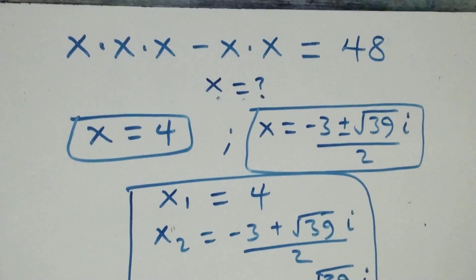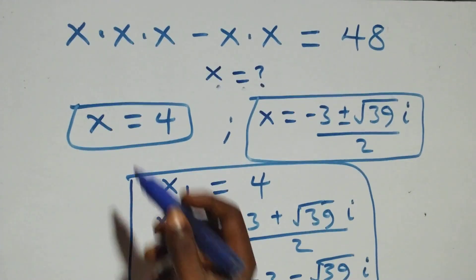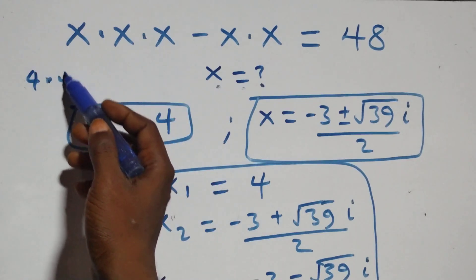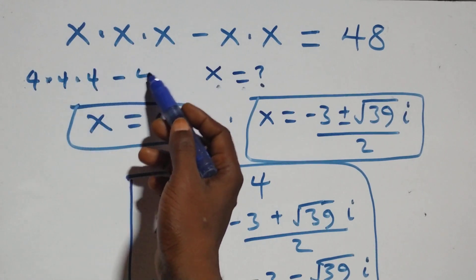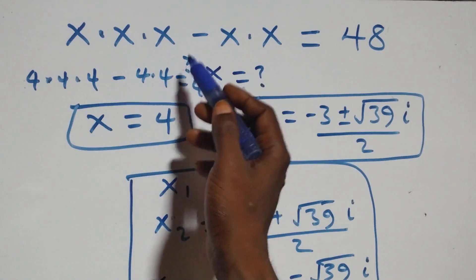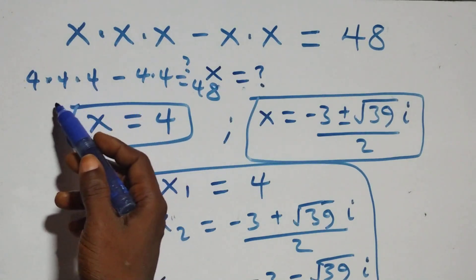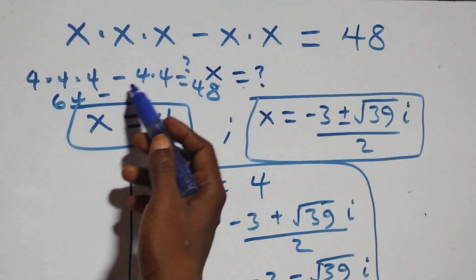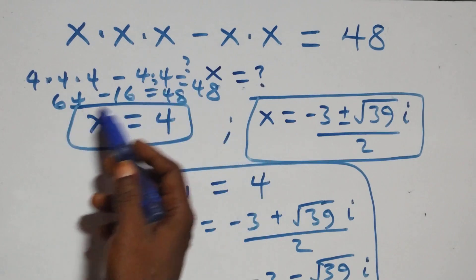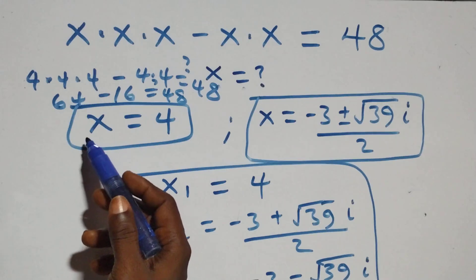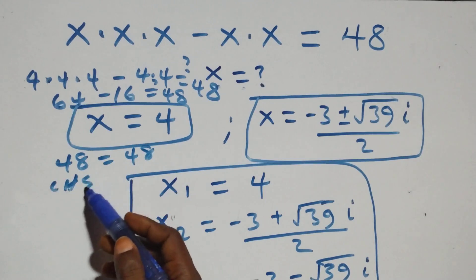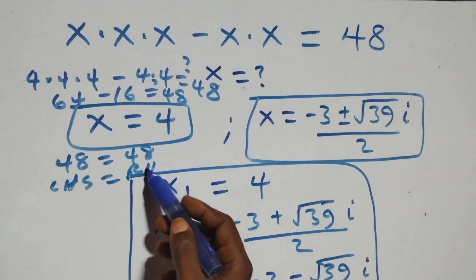Now let's verify by substituting x equals to 4: we get 4 times 4 times 4 minus 4 times 4. That's 64 minus 16, which equals 48 on this side. So 64 minus 16 is indeed 48, which equals 48 on the right hand side — left hand side equals right hand side, confirming that x equals to 4 satisfies the given problem.